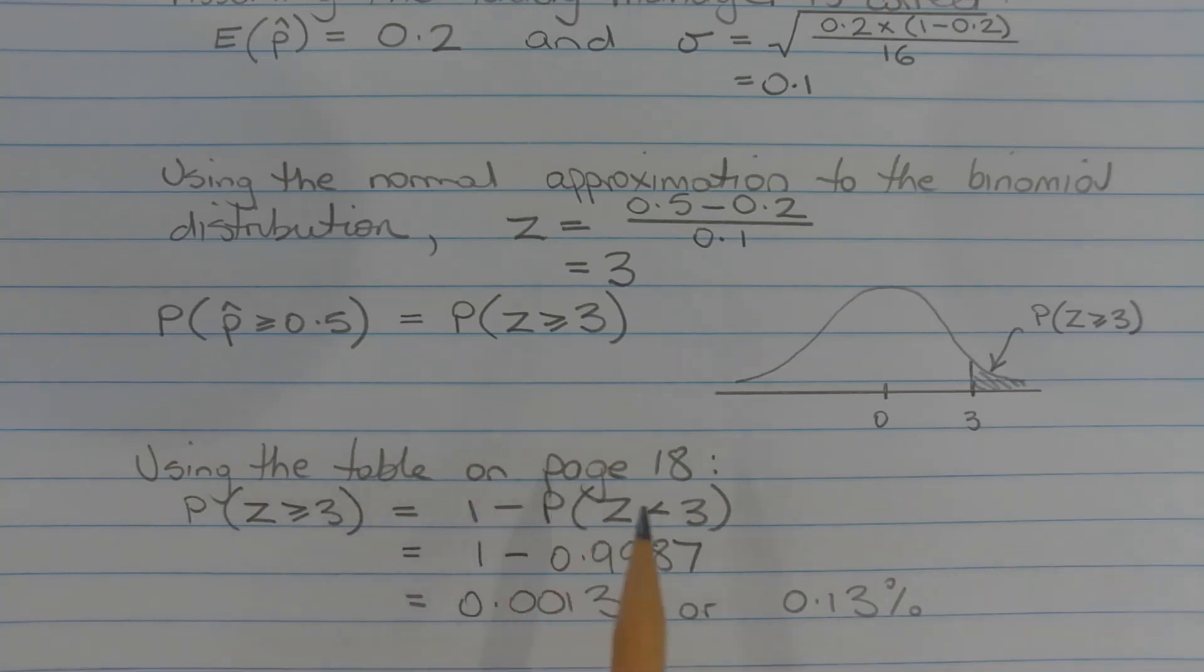Using the table on page 18, the probability that z is greater than or equal to 3 is equal to 1 minus the probability that z is less than 3, which equals 1 minus 0.9987, which equals 0.0013 or 0.13%.